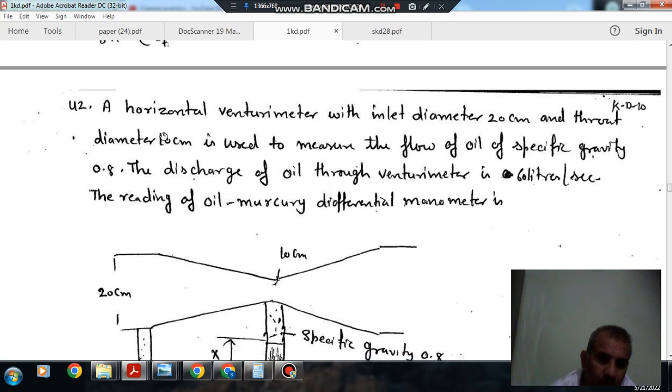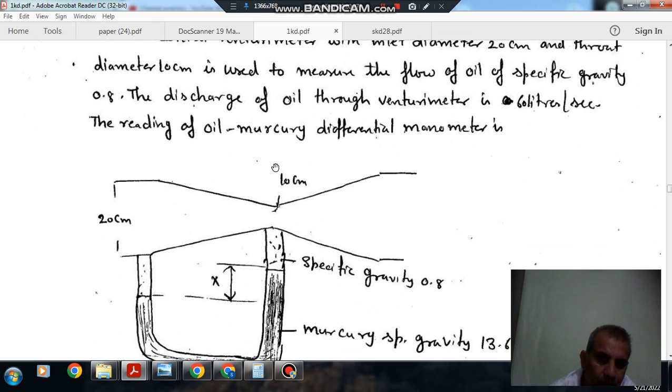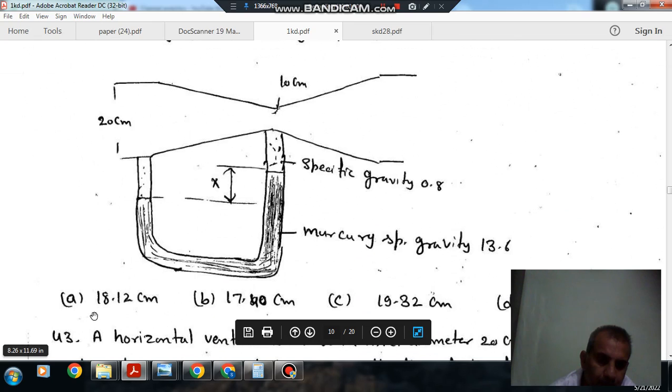Question number 42: A horizontal venturimeter with inlet diameter 20 cm and throat diameter 10 cm is used to measure the flow of oil of specific gravity 0.8. The discharge of oil through the venturimeter is 60 liter per second. The reading of oil mercury differential manometer is: option A 18.12 cm, option B 17.40 cm, option C 19.32 cm, option D 18.87 cm.